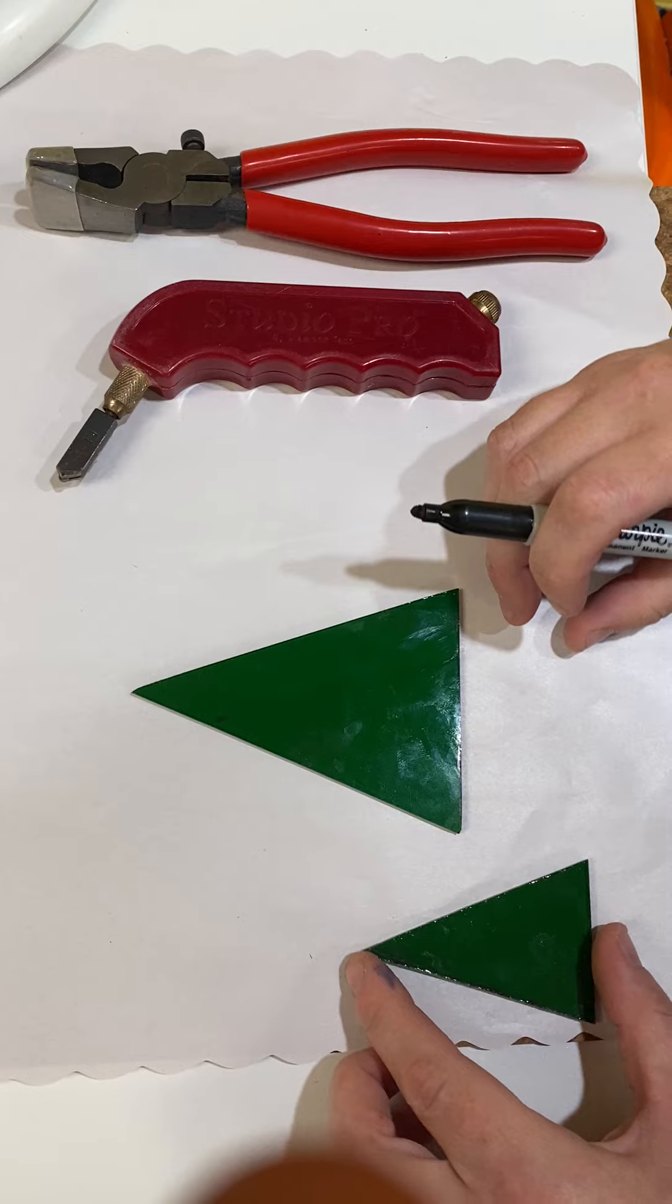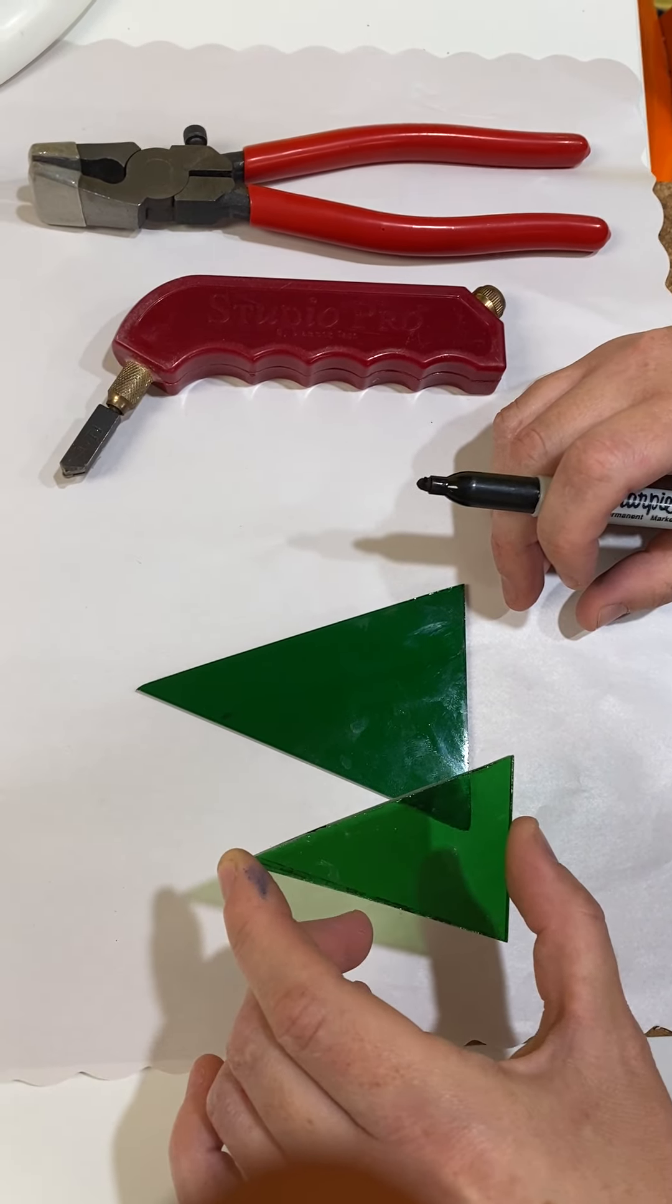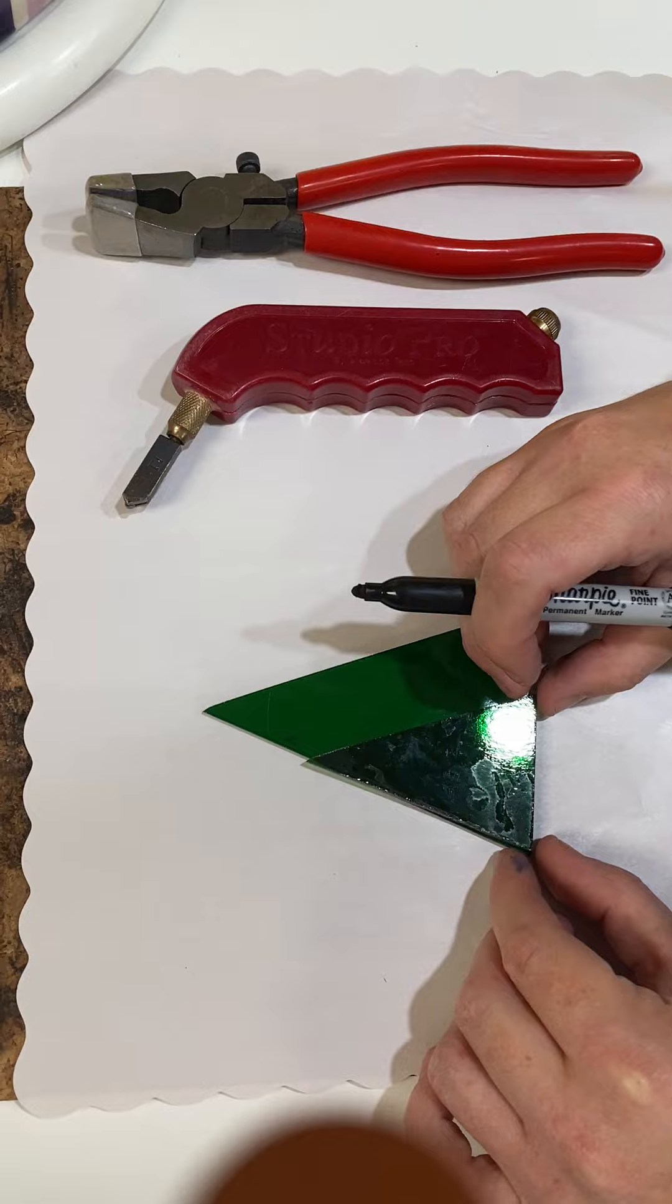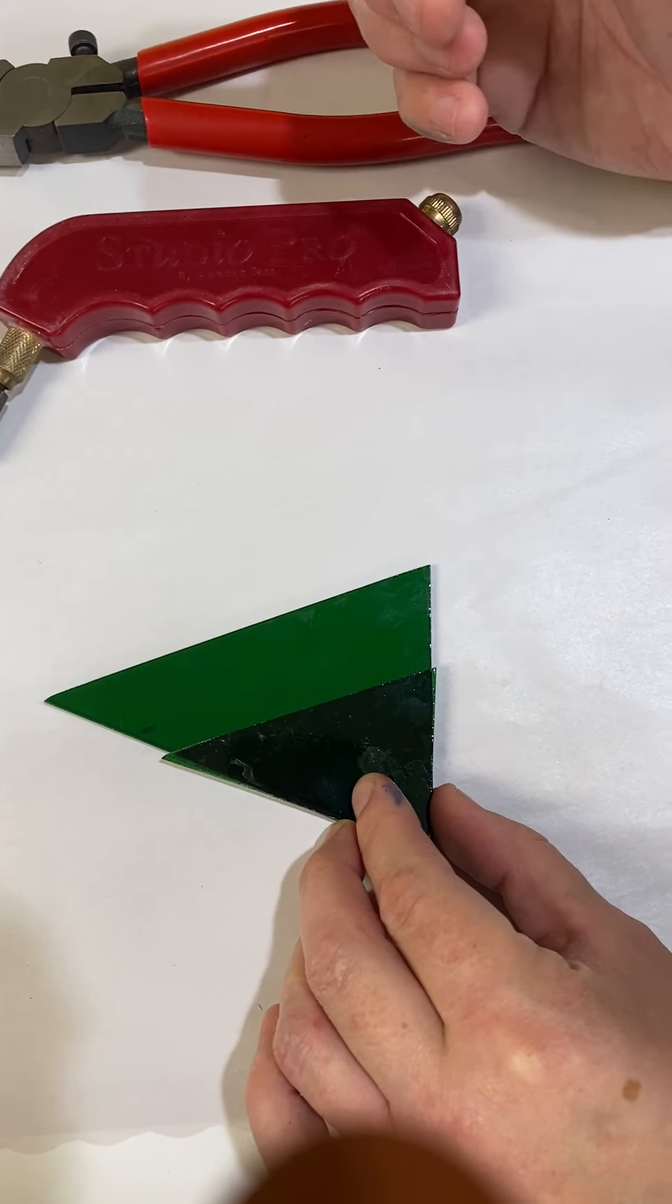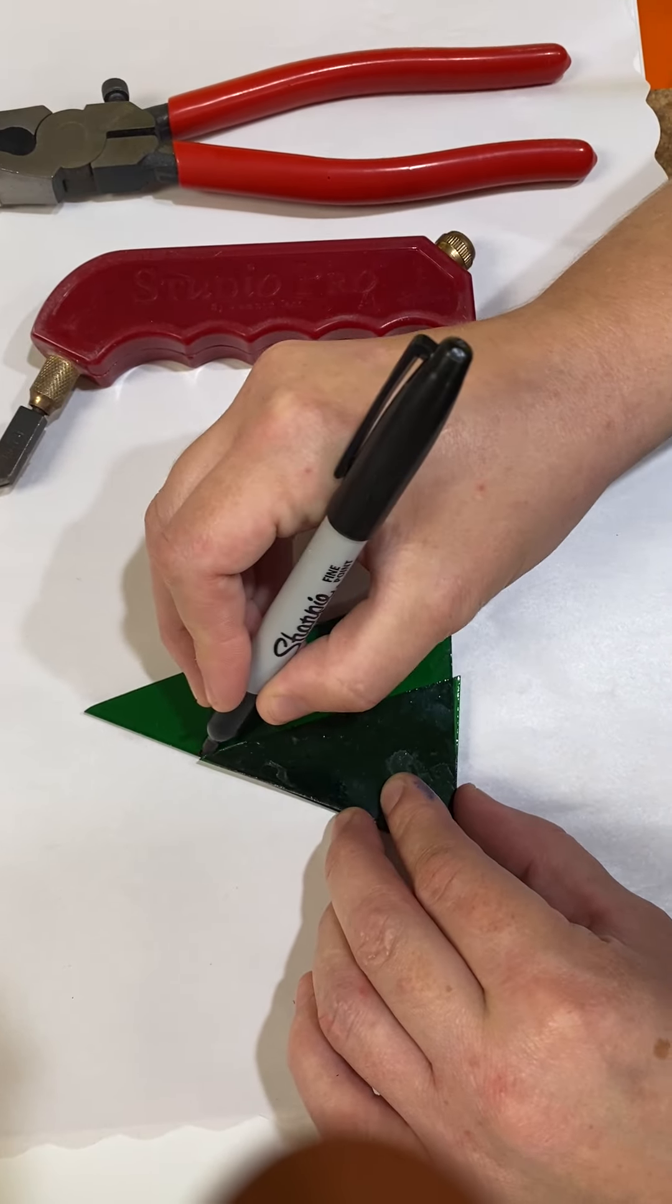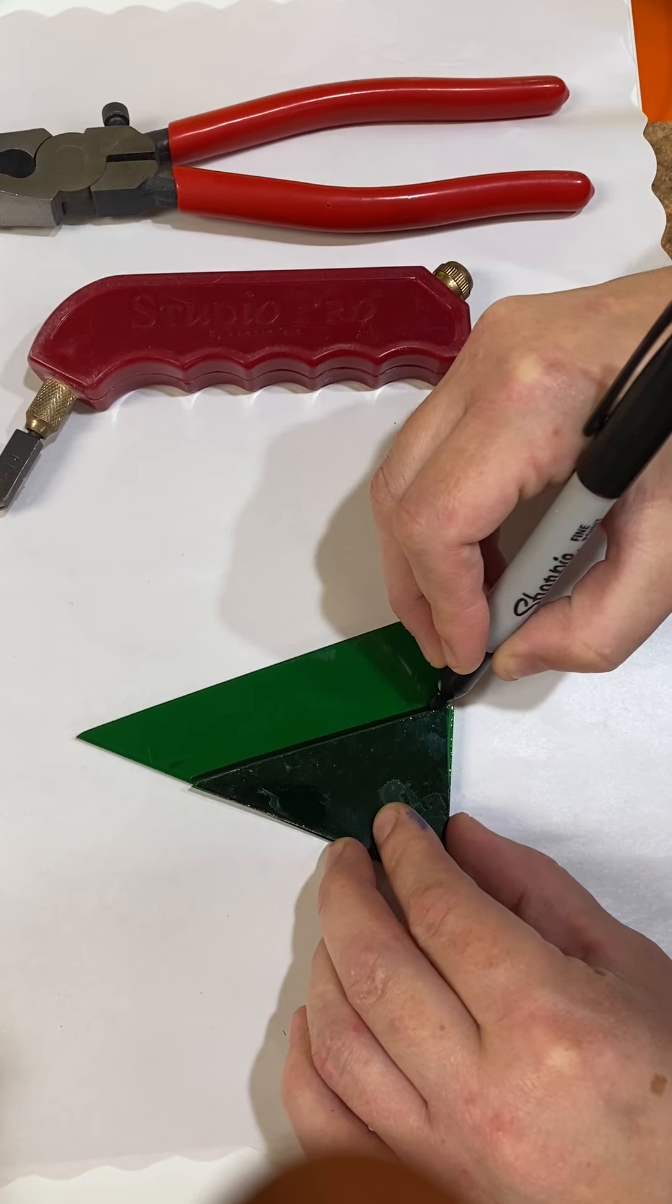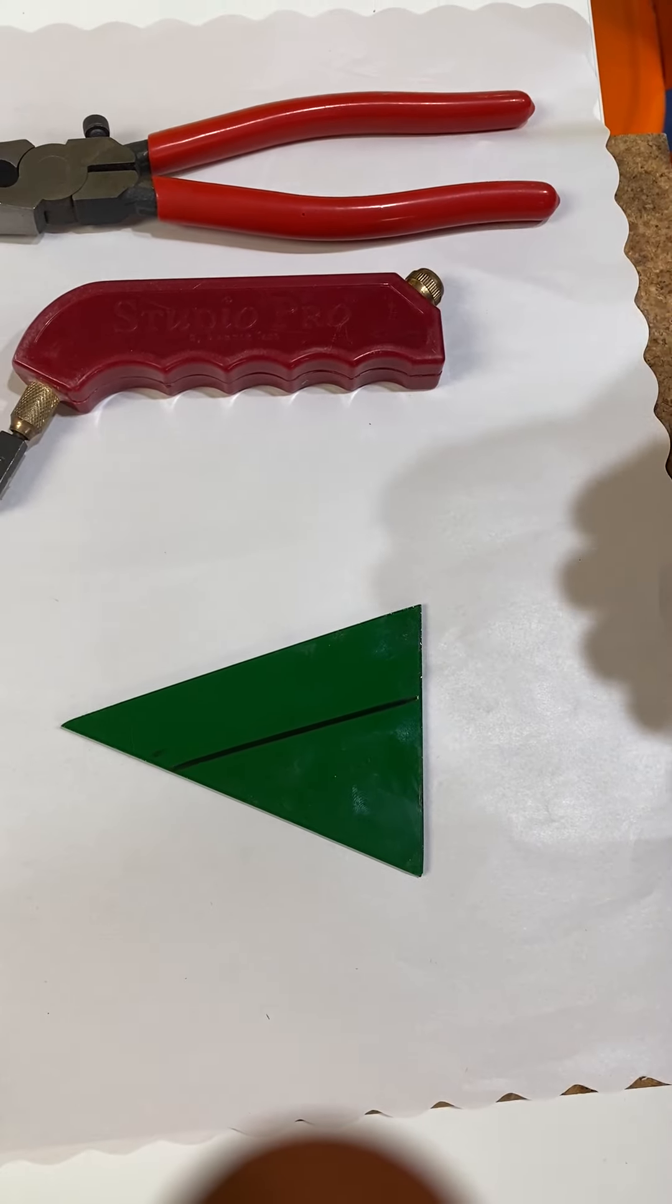Emily's going to use the smaller triangle as the template. You can also use a paper template. She's just going to draw it on with the Sharpie. The Sharpie will come off later with rubbing alcohol if you need it to.